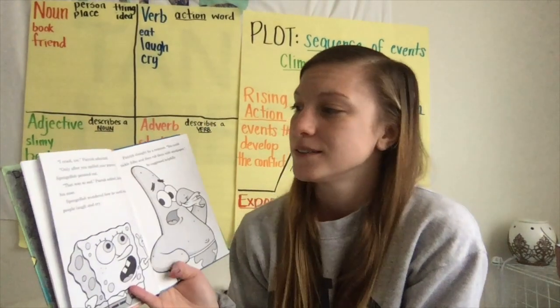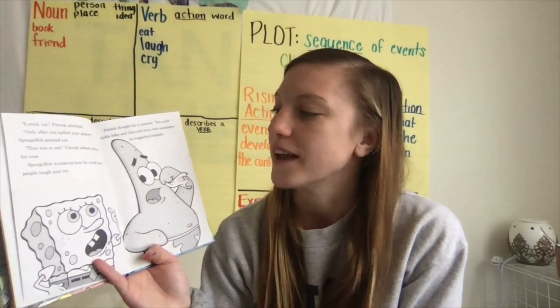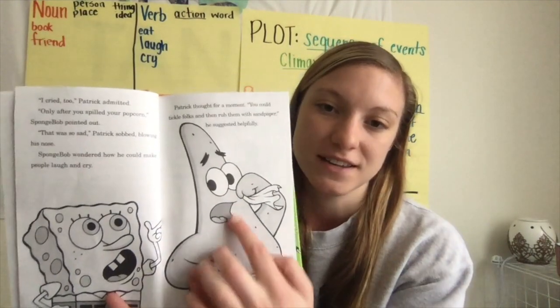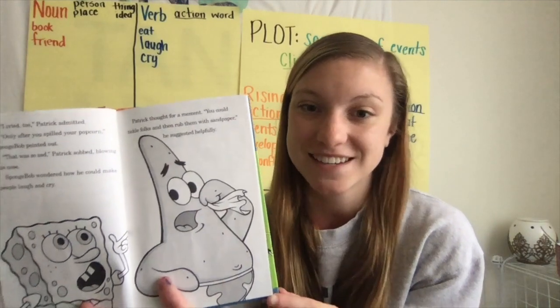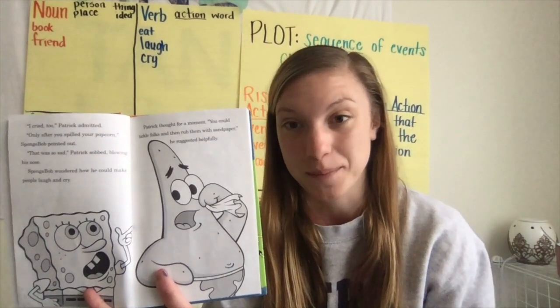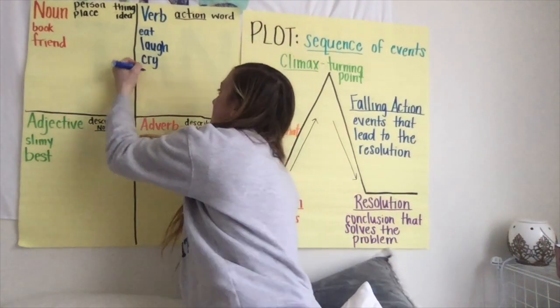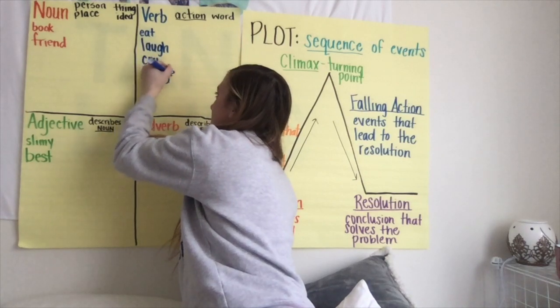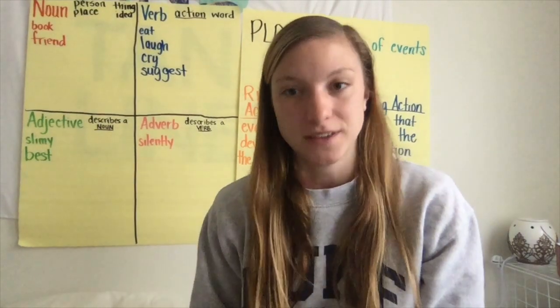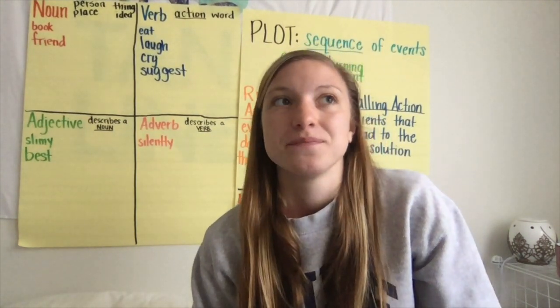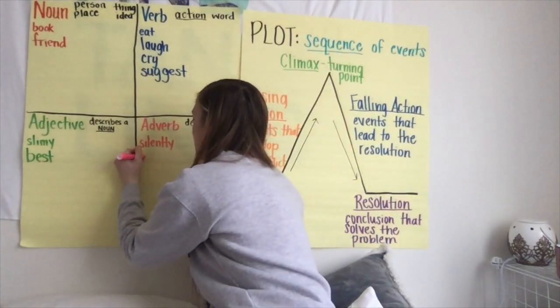'I cried too,' Patrick admitted. 'Only after you spilled your popcorn,' SpongeBob pointed out. 'That was so sad,' Patrick sobbed, blowing his nose. SpongeBob wondered how he could make people laugh and cry. Patrick thought for a moment. 'You could tickle folks and then rub them with sandpaper,' he suggested helpfully. So Patrick is suggesting a silly idea — you could tickle someone to make them laugh and rub them with sandpaper to make them cry. To suggest means to give your idea about something. And he suggested it helpfully — that's how he suggested it, so 'helpfully' is our adverb.